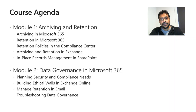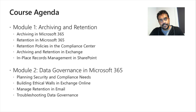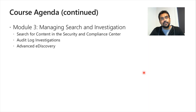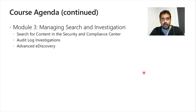Module 2 is data governance in Microsoft 365: planning security and compliance needs, building ethical walls in Exchange Online to prevent two groups within the same organization from exchanging emails with each other, and troubleshooting data governance. Module 3 covers managing search and investigation — searching emails, files, and other content for administrative or investigative purposes, and searching the audit log to trace actions such as removing a user from a group or deleting data.